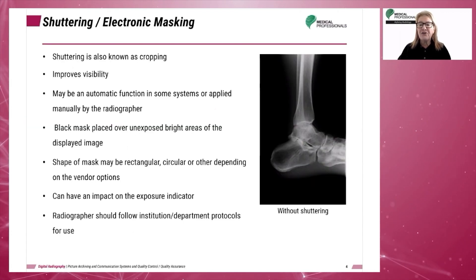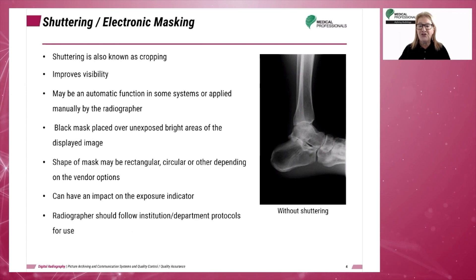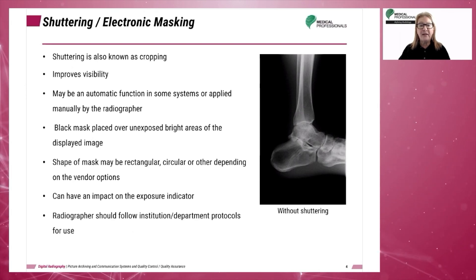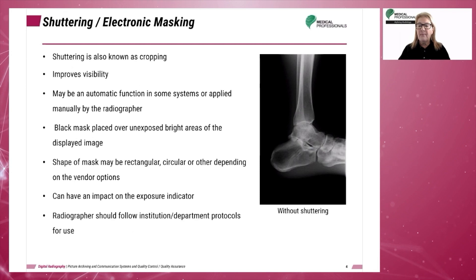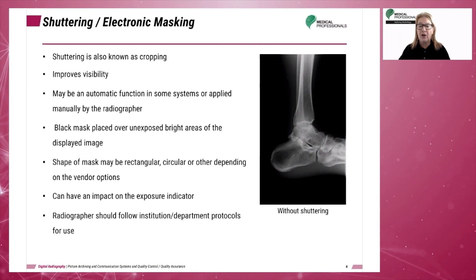Image shuttering allows the radiographer to place a black border or background around the original collimated edges of the image. The black border eliminates any white areas seen around a collimated image. Image shuttering is not to be used as a replacement for actual pre-exposure collimation or beam restriction. Proper collimation restricts the x-ray beam to the anatomy of interest, reduces patient dose, and increases contrast resolution by reducing the amount of scatter produced. Image shuttering simply makes the displayed image more aesthetically pleasing to the viewer, and institutional and departmental protocols should be followed.